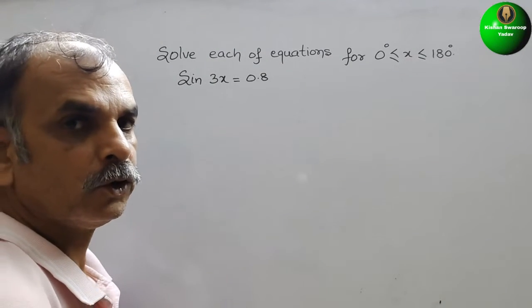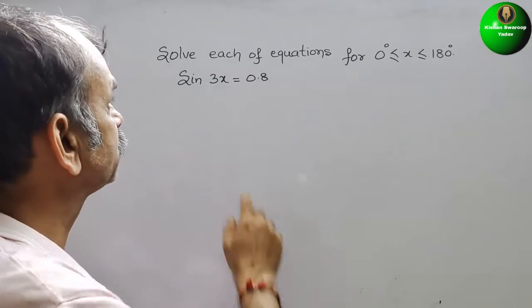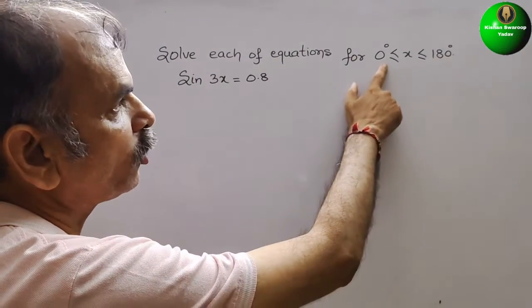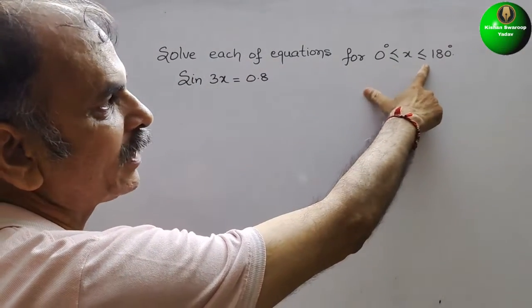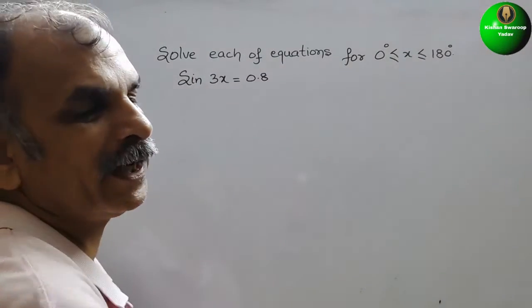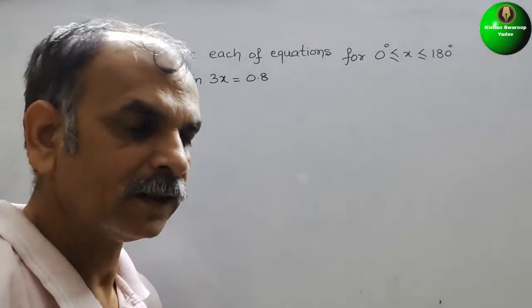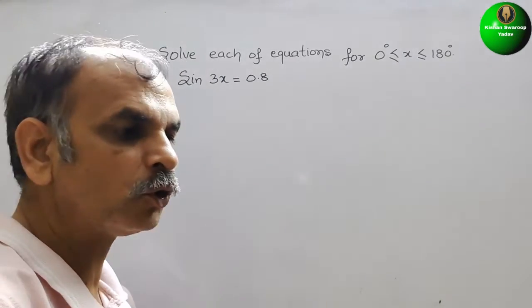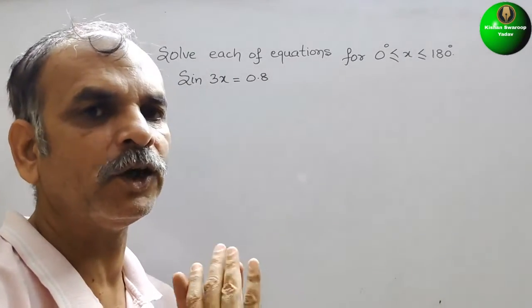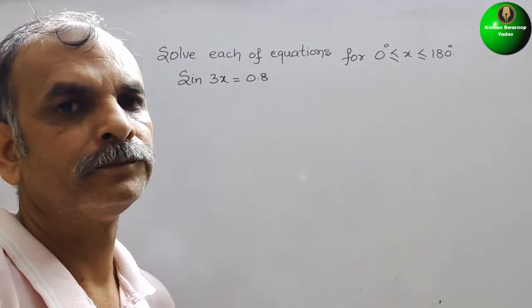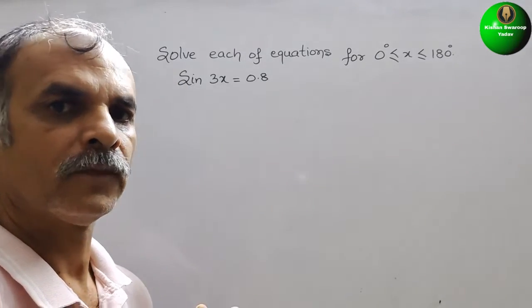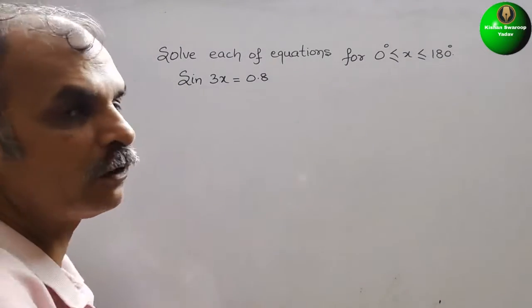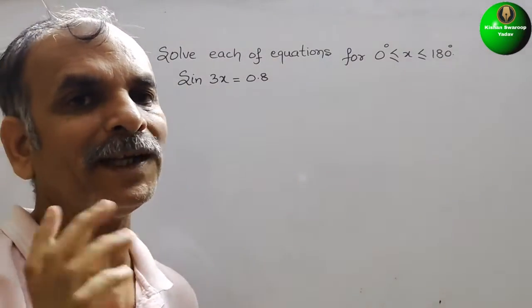The question is: solve each equation for 0° ≤ x ≤ 180°. That means we have to find the solution between 0 and 180 degrees only. What they have given is: sine 3x is equal to 0.8.